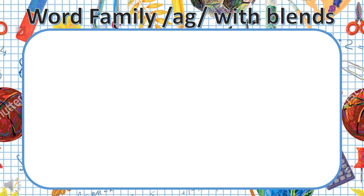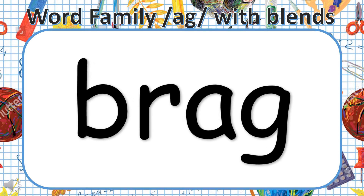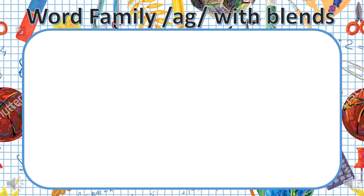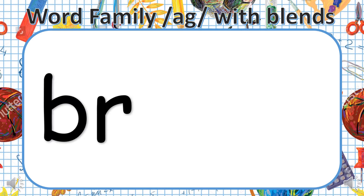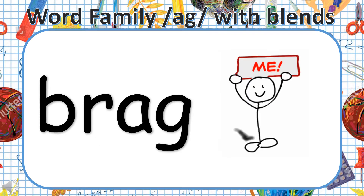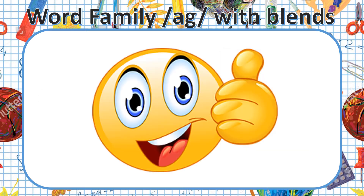The next word we are going to look at is BRAG. Listen carefully — BRAG. Let's break up the word into the blend and the word family. In this word we use the R blend with the letter B. If you put them together, they make the sound BR. Then we add the AG sound. When I win the race, I brag to my friends. Good job, let's keep going.